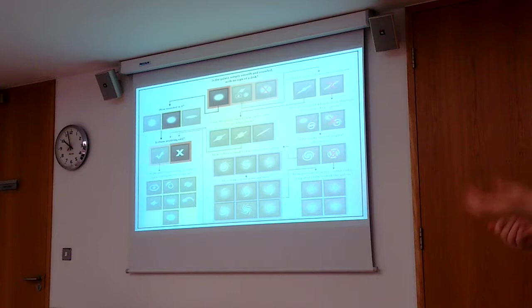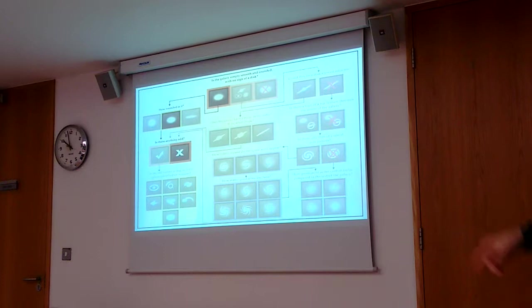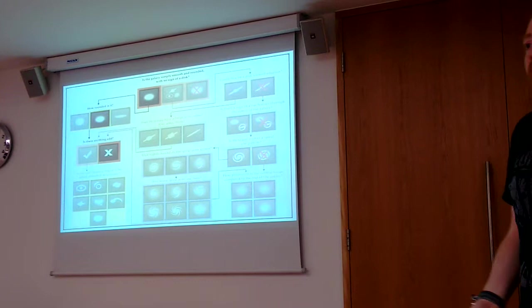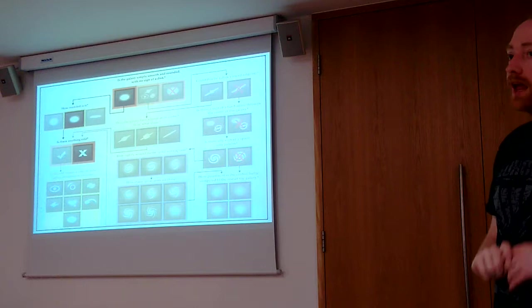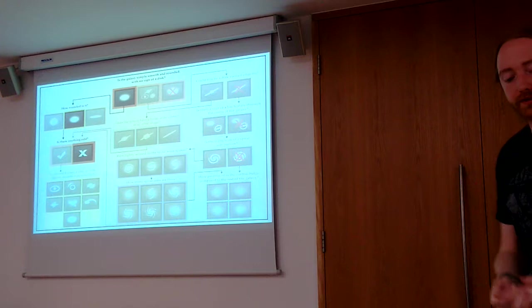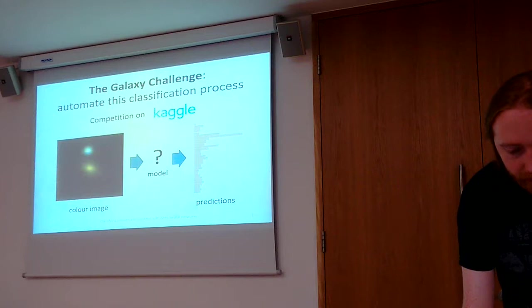So each individual that classifies an image takes a path through this tree. And then when say 40 or 50 people have done this for a given image, we can aggregate all of their answers into a probability distribution across all these different questions. And the goal of the competition on Kaggle was actually to predict these probabilities from the pixels.